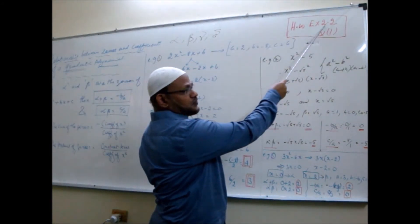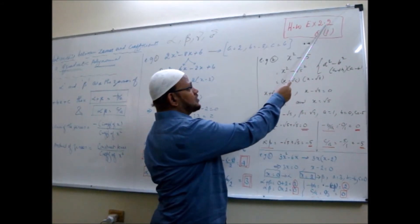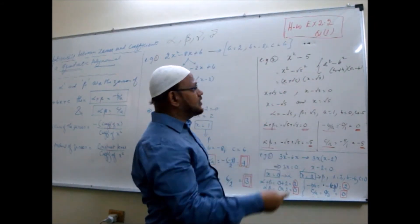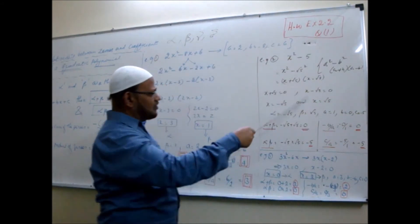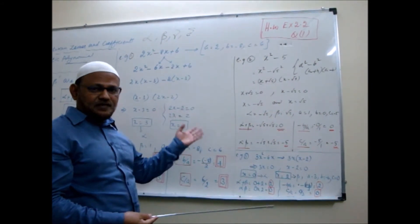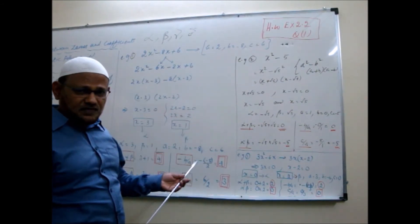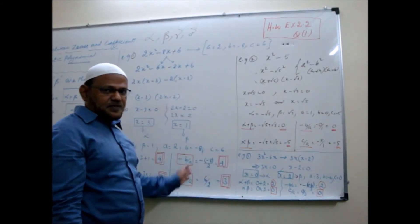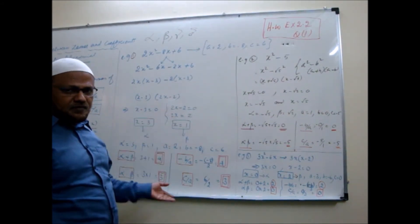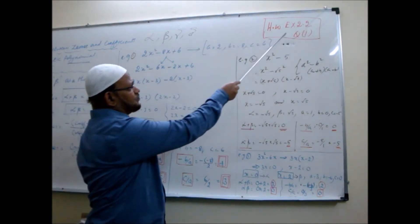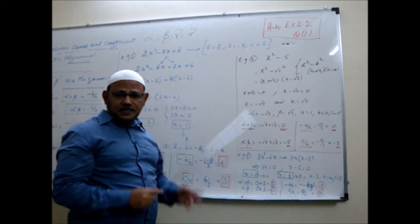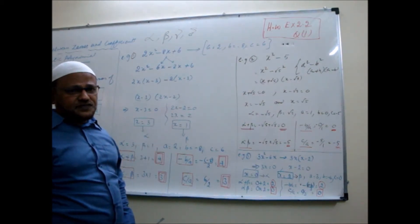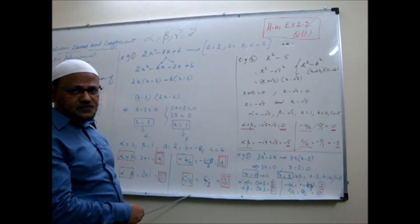Take Exercise 2.2, question number 1. There are some bits of questions — all of this kind. You should know how to factorize and find the zeros. The new thing here is verifying the property. They ask you to find the zeros of the quadratic polynomial and verify the relationship between zeros and coefficients, so you have to do all these steps.